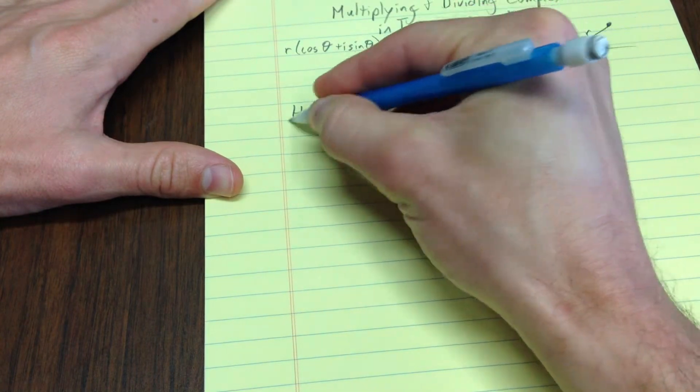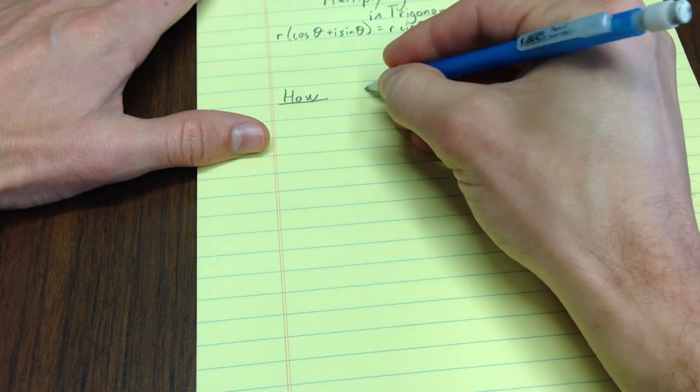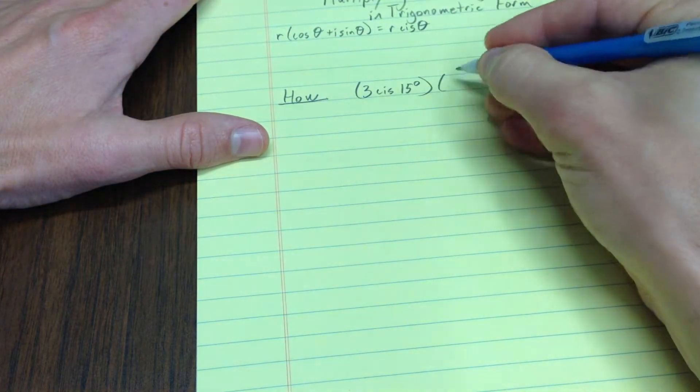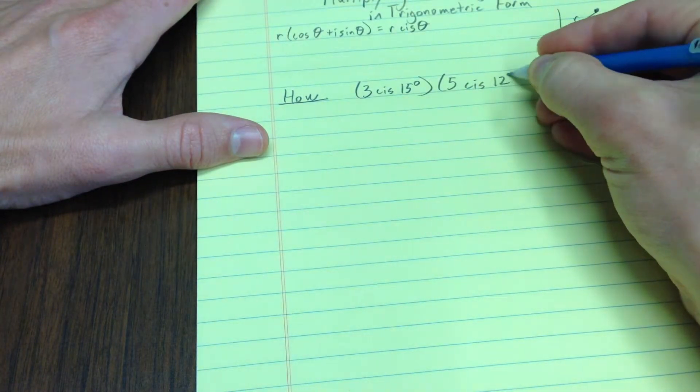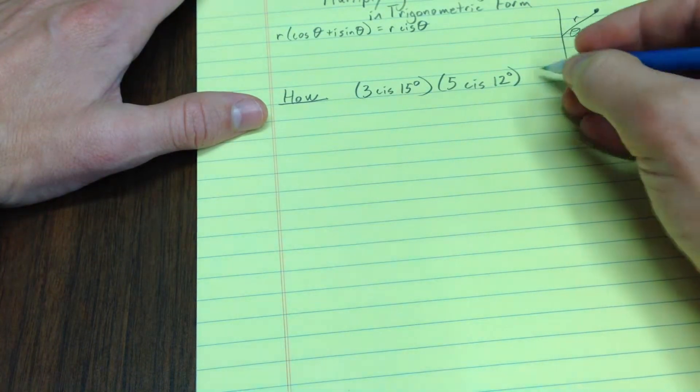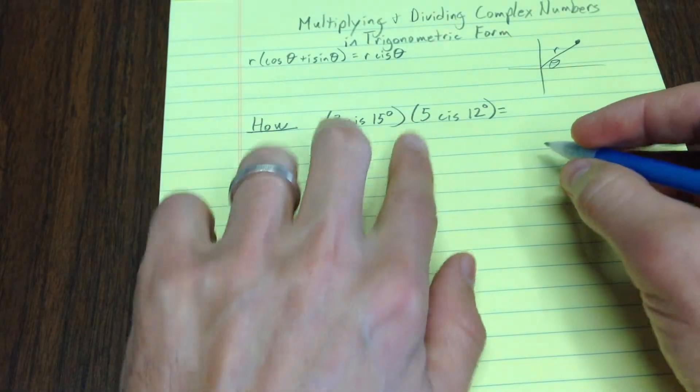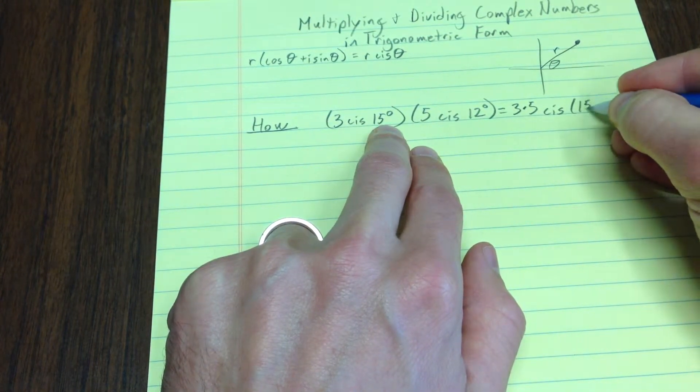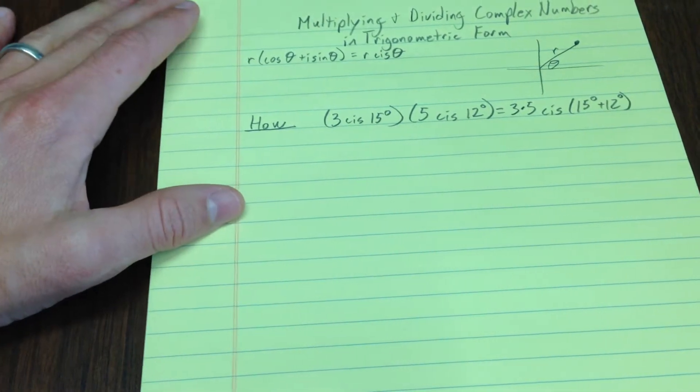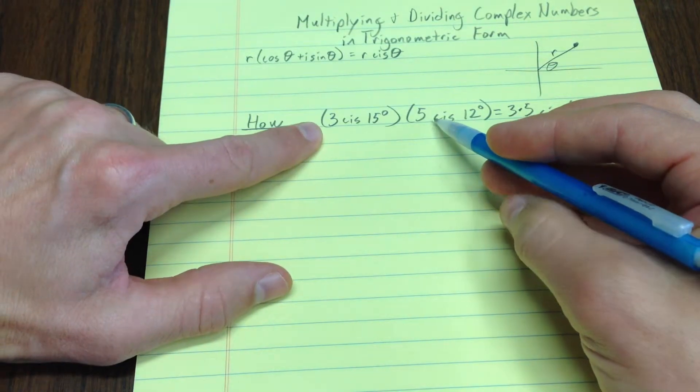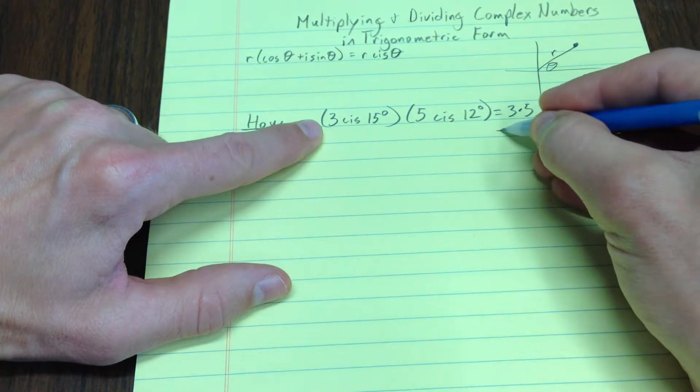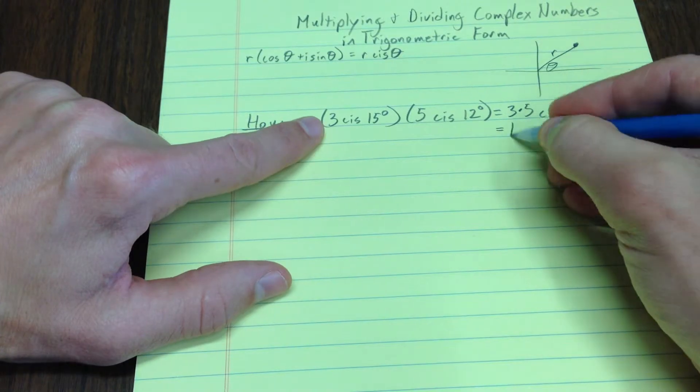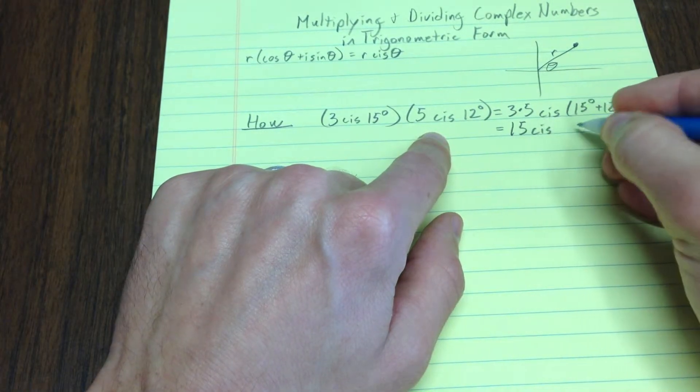So, how. Let's suppose that I have 3 cis 15 degrees times 5 cis 12 degrees. This is really almost laughably easy. I do 3 times 5 cis 15 plus 12. That's kind of weird. When you multiply two numbers in trigonometric form, you multiply the magnitudes or the radius, but you add the angles.